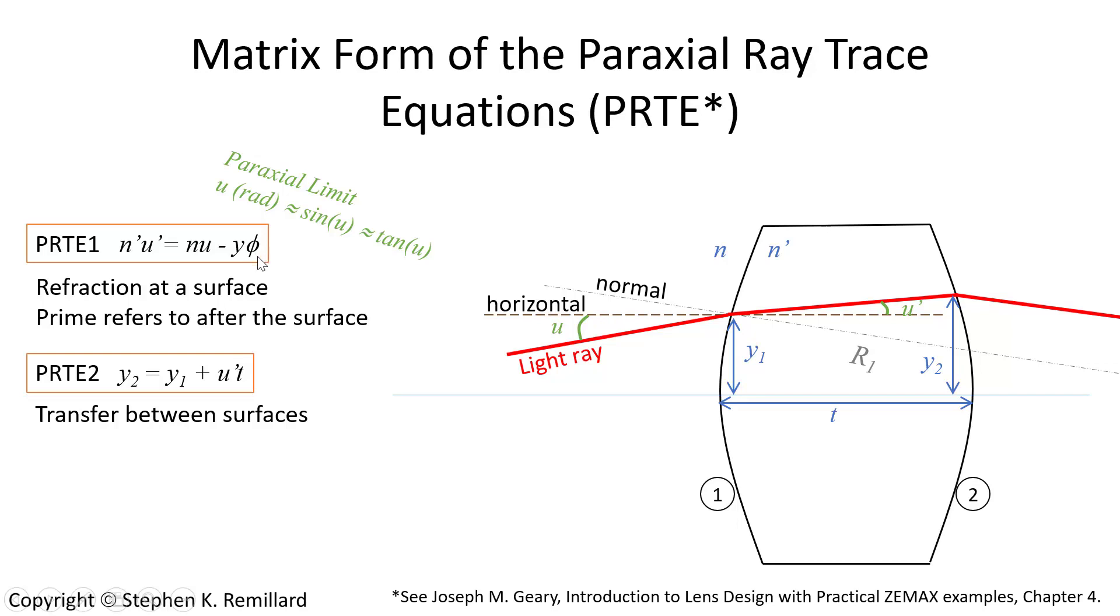The variable phi in paraxial ray trace equation number one is the refracting power of the surface where that refraction occurs. Refracting power is the difference in refractive indices on either side times the curvature. Curvature is one divided by radius of curvature, and in the case where we are dealing with a lens and air, the refracting power of that surface is just n of the glass minus one divided by the radius of curvature of that surface.